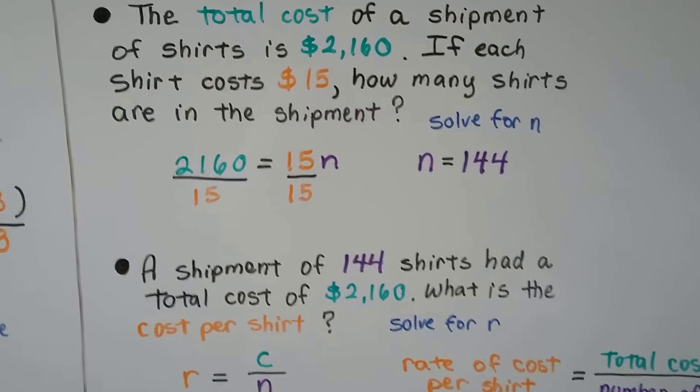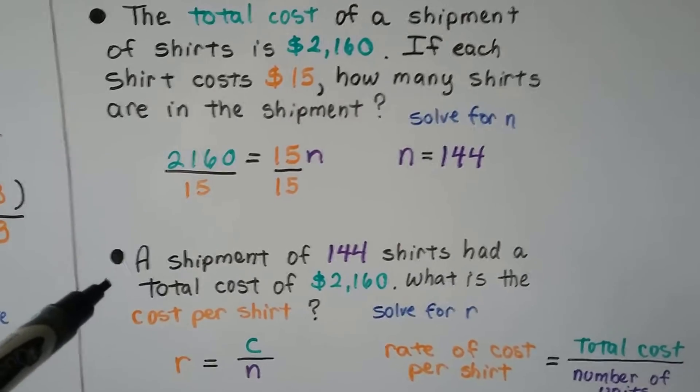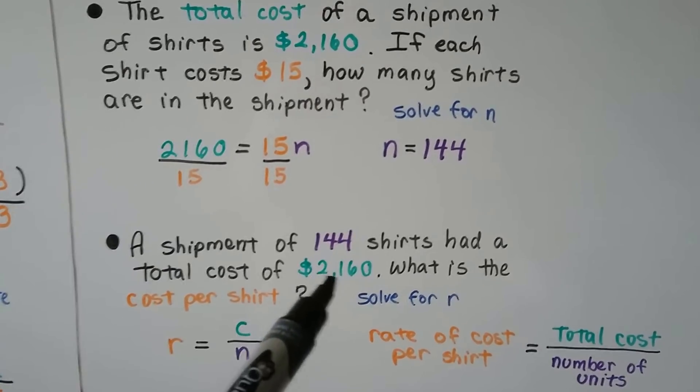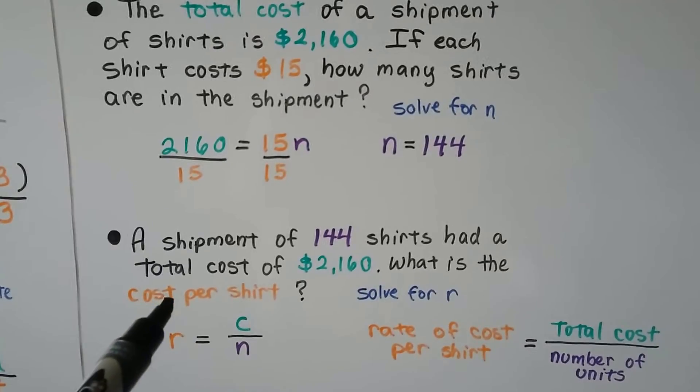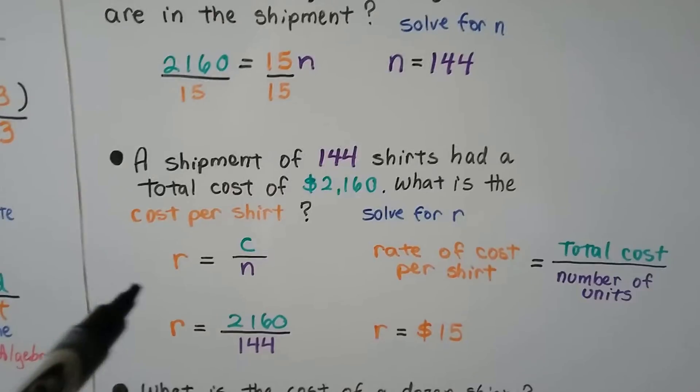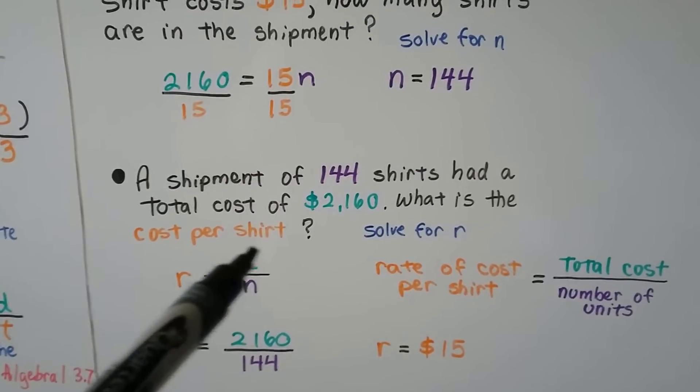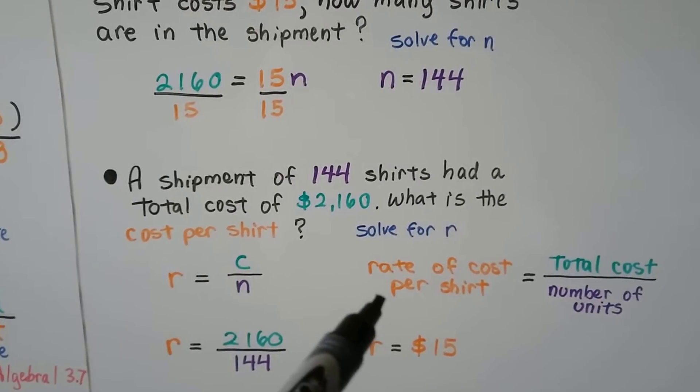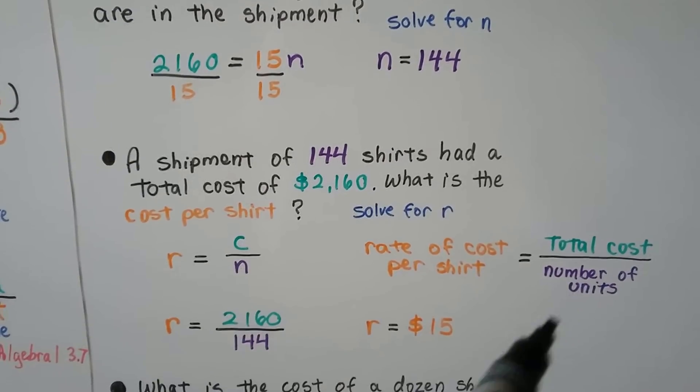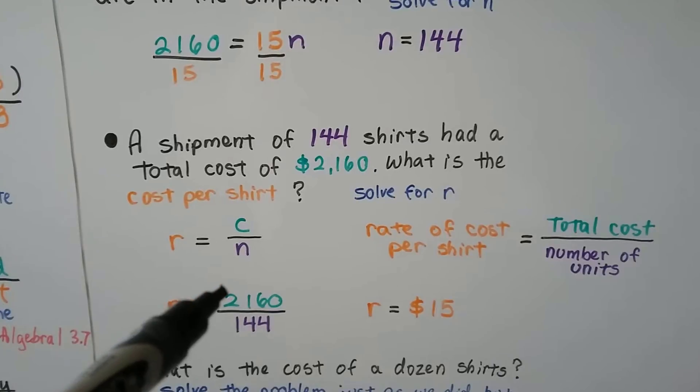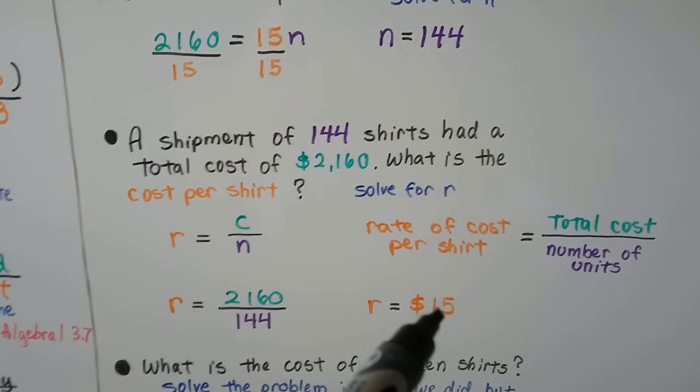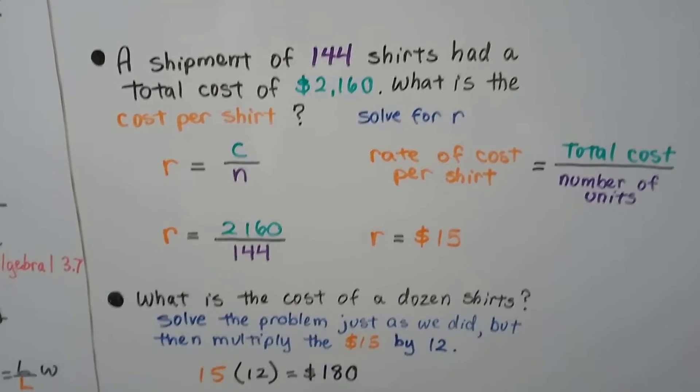Now what if it was the other way around, and it said a shipment of 144 shirts, so it gave us the 144, had a total cost of 2,160. What is the cost per shirt? So now we're looking for that 15. So now we're doing rate equals cost divided by the number. The rate of the cost per shirt equals the total cost divided by the number of units. So the rate is going to be the 2,160 divided by the 144, and that's going to give us 15. Because it's cost, we put the dollar sign in front of it.